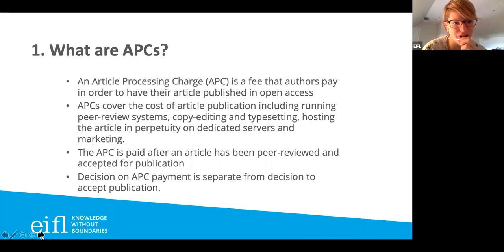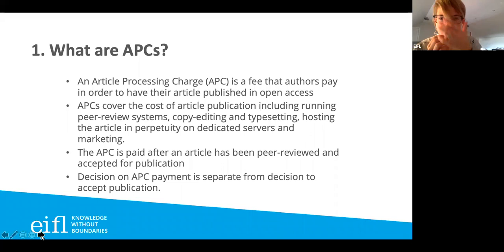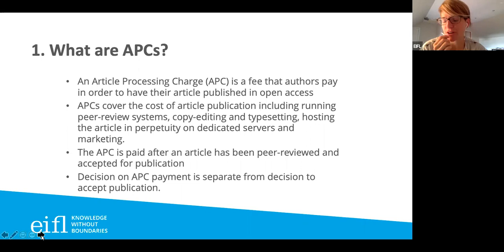So what are article processing charges? Article processing charges are fees that authors pay in order to have their article published in open access. These cover the cost of publication including running peer review systems, copy editing, typesetting and hosting the article in perpetuity on dedicated servers. This fee is charged by the publisher to make the article open access, and it is only paid after an article has been peer reviewed and accepted for publication. The decision on the APC payment is separate from the decision to accept publication.